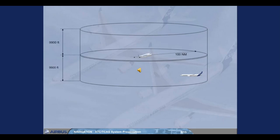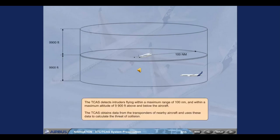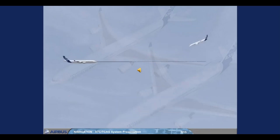The TCAS obtains data from the transponders of nearby aircraft and uses these data to calculate the threat of collision. The TCAS interrogates the transponder of the intruders and determines for each: its relative bearing, its range and closure rate, and its relative altitude if equipped with ATC Mode C or S. The TCAS then computes the intruder trajectory with the estimated time TAU before reaching the Closest Point of Approach (CPA).